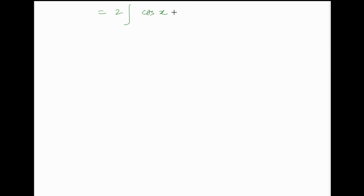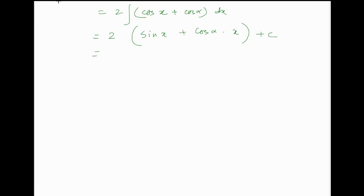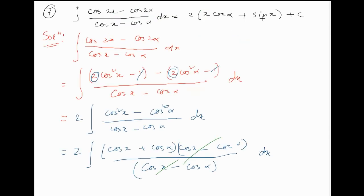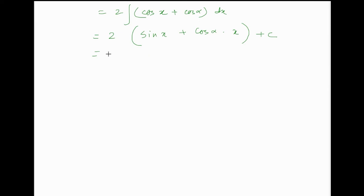2 into integration of (cosx plus cosα) dx equals 2 into (sinx plus cosα times x) plus c, which gives the final answer: 2 into (x cosα plus sinx) plus c.